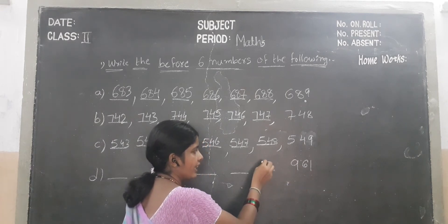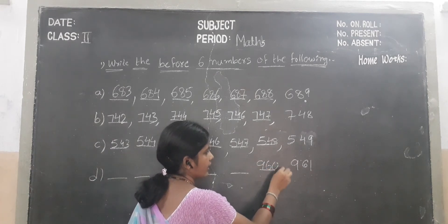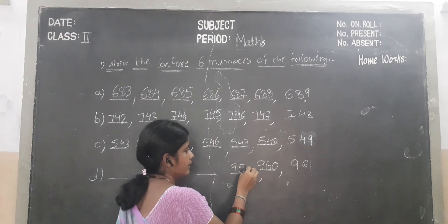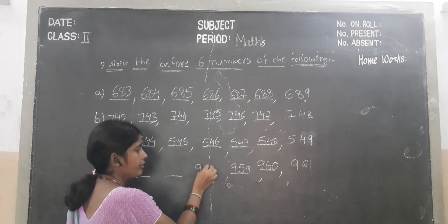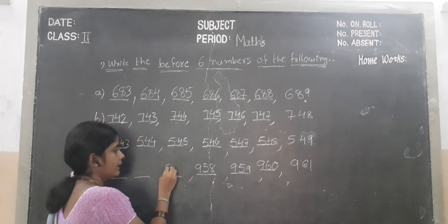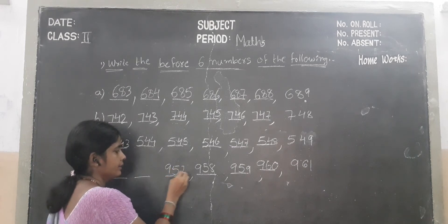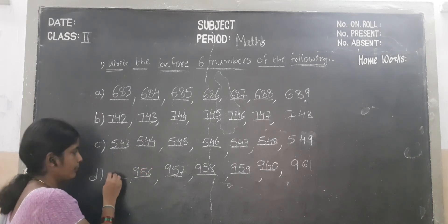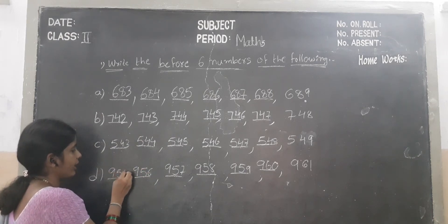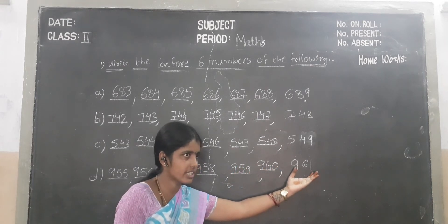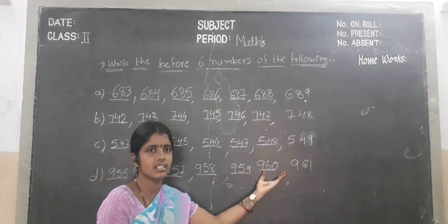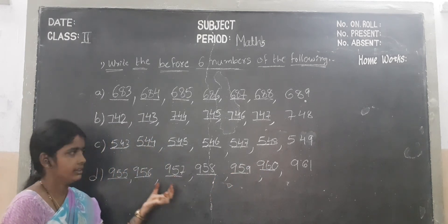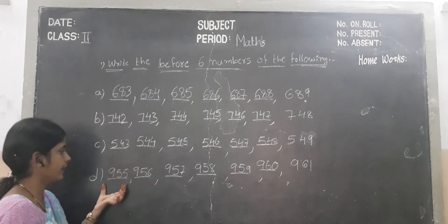Next — 961. Before number is 960. Before number 959. Before number 958. Before number 957. Before number children? 956. Before number 955.